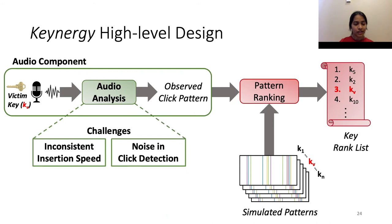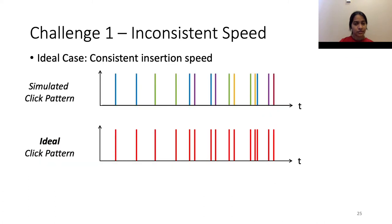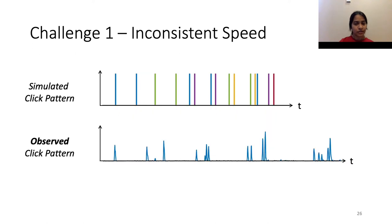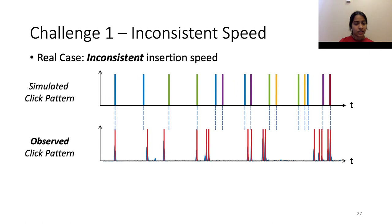Now we delve into the details of audio analysis. Particularly, we talk about two important challenges faced by this module and briefly describe the solutions. First, let us look into the challenge of inconsistent insertion speed. We know that the simulated pattern is modeled based on constant insertion speed. In the idealistic case where the real key insertion also exhibits the same pattern, there would be a one-to-one correspondence between the clicks of the two patterns, making pattern matching straightforward. However, in reality, the key insertion data looks very different, and therefore the observed click pattern has very different trends from that of the simulated pattern. Even if we scale up the simulated click pattern to match the observed click pattern, there is no sufficient correspondence. This is clearly a case of inconsistent insertion speed in the observed click pattern.